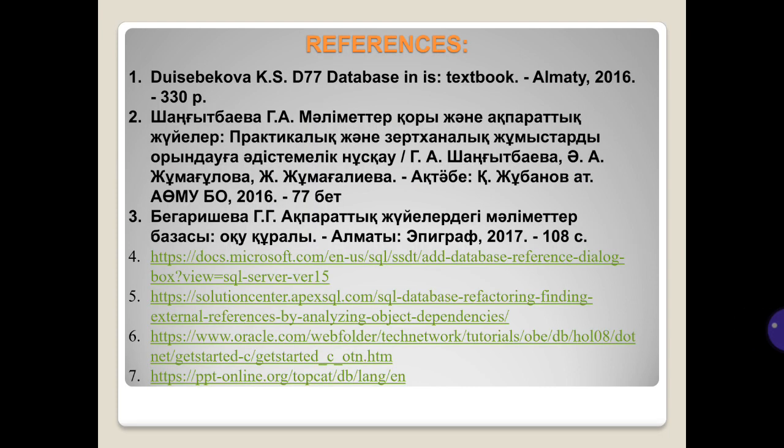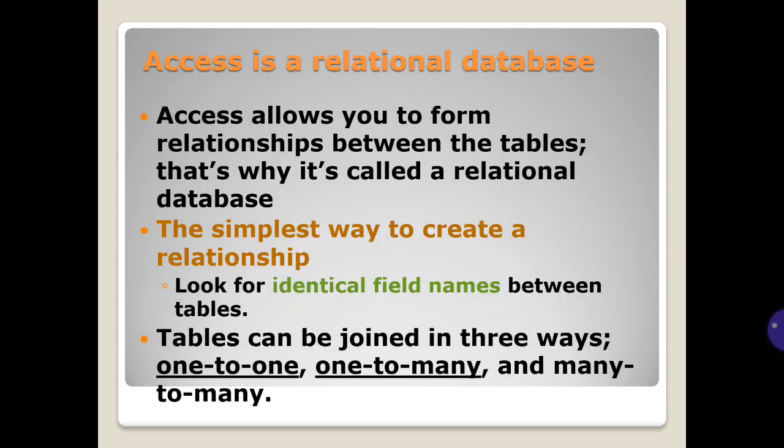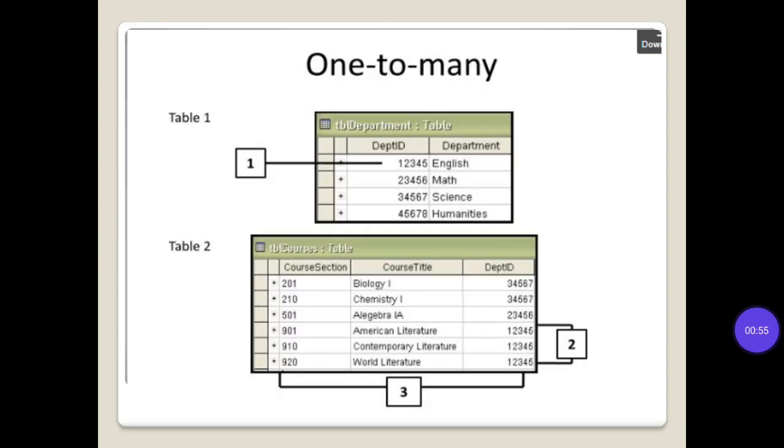There are some references for you. Access, the relational database. Access allows you to form relationships between tables - that's why it's called a relational database. The simplest way to create a relationship is to look for identical field names between tables. Tables can be joined in three ways: one-to-one, one-to-many, and many-to-many.